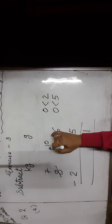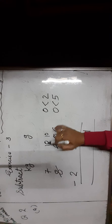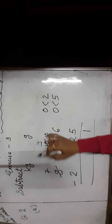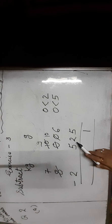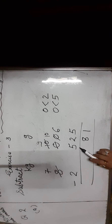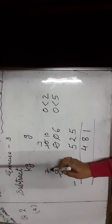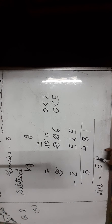Borrow 1 gram to make 10 and 10 becomes 9. Now subtract: 10 minus 2 is equal to 8. Then 9 minus 5 is equal to 4. Subtract the kilogram column: 7 minus 2 is equal to 5. Thus, the answer will be 5 kilogram 481 grams.